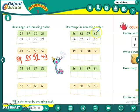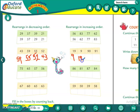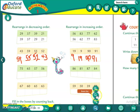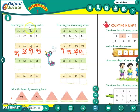Now rearrange in increasing order — that means from the smallest number to the biggest number. Which is the smallest number? 9. Then which number is slightly bigger than 9? 19. Then which number comes next? 90. And the biggest number is 91.